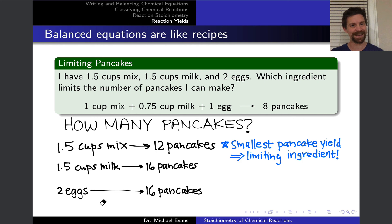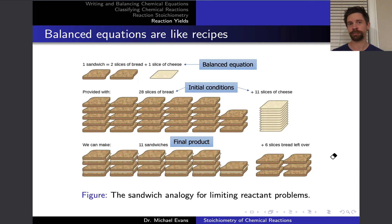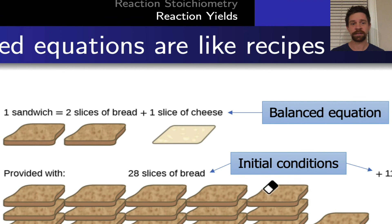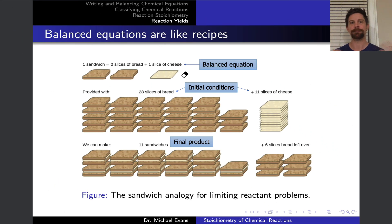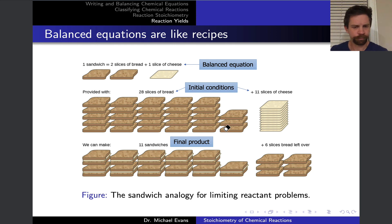I use the sandwich analogy from your text to explain limiting reagent. It's a simpler recipe: a cheese sandwich involves two slices of bread and one slice of cheese to make one sandwich. This is a balanced recipe with one sandwich on the product side, two slices of bread and one slice of cheese on the reactant side. In a limiting reagent problem you'll be given initial conditions — the amounts of reactants you're combining — and here the example is 28 slices of bread and 11 slices of cheese.